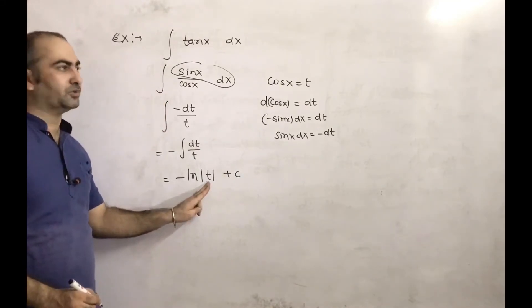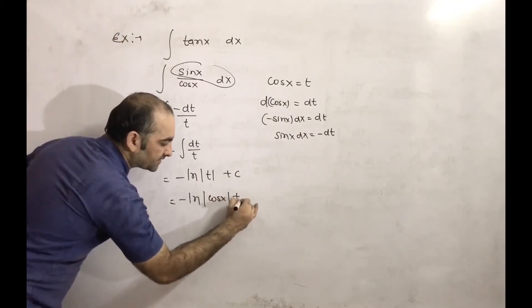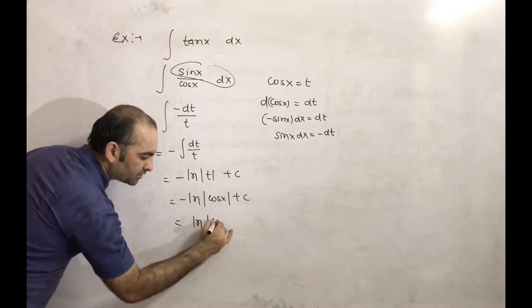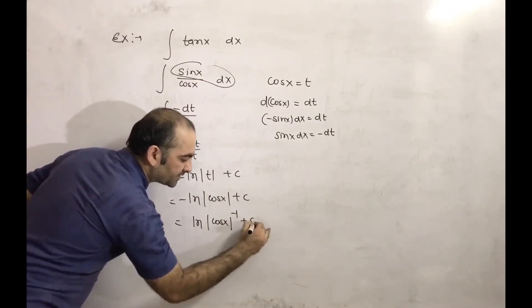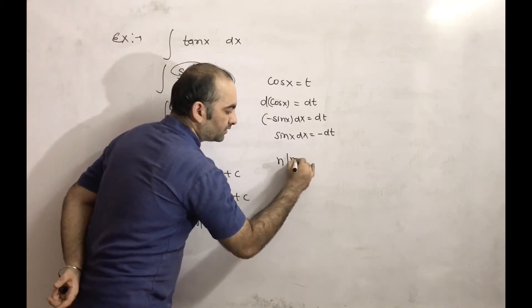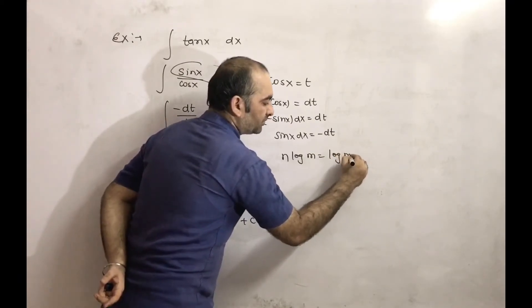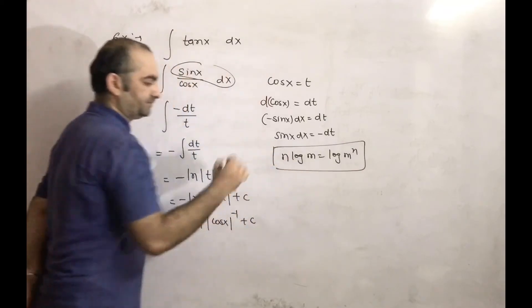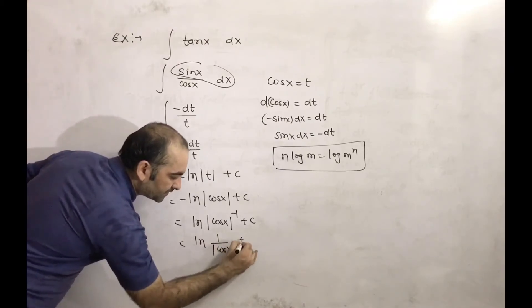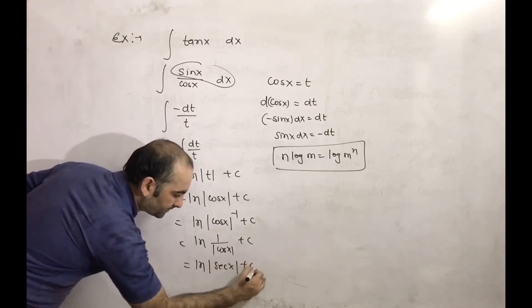Now we put back the value of t, which is cos x. This gives minus ln|cos x| + c. Using the log property, we write this as ln|cos x|^(−1) + c, which equals ln(1/|cos x|) + c, and this is ln|sec x| + c.